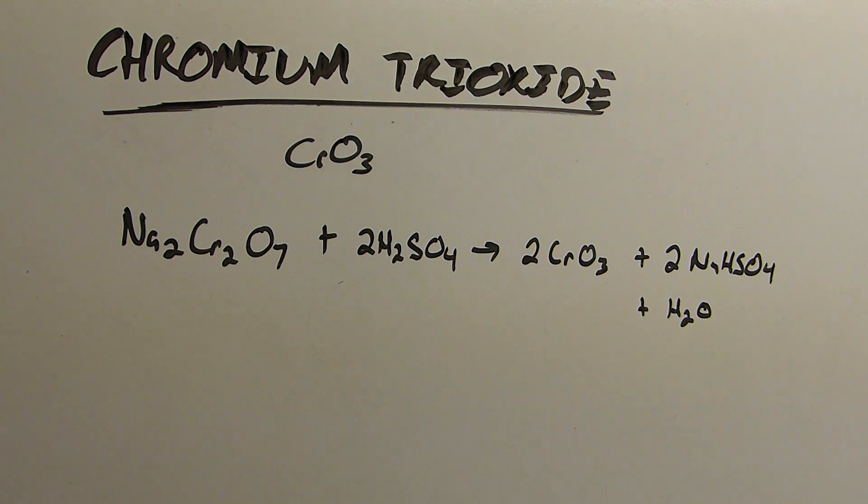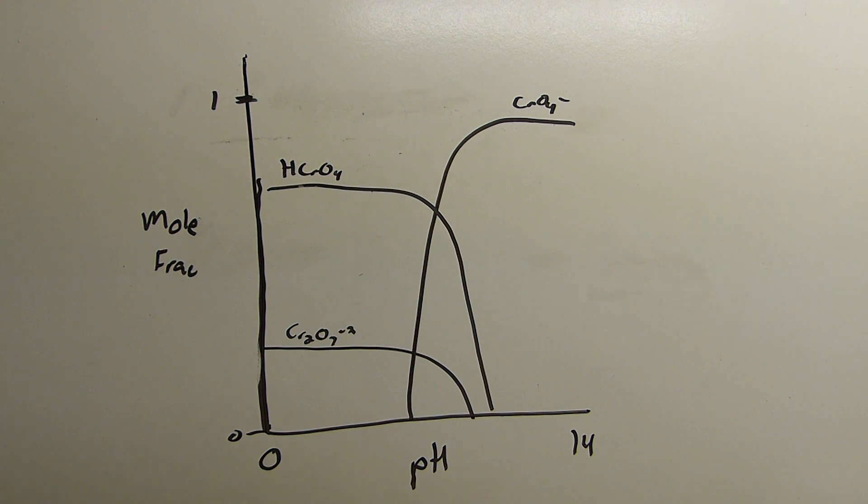Now before you can understand how this reaction works I need to show you an equilibrium. This chart here represents the mole fraction of various species of chromates across a wide range of pHs.